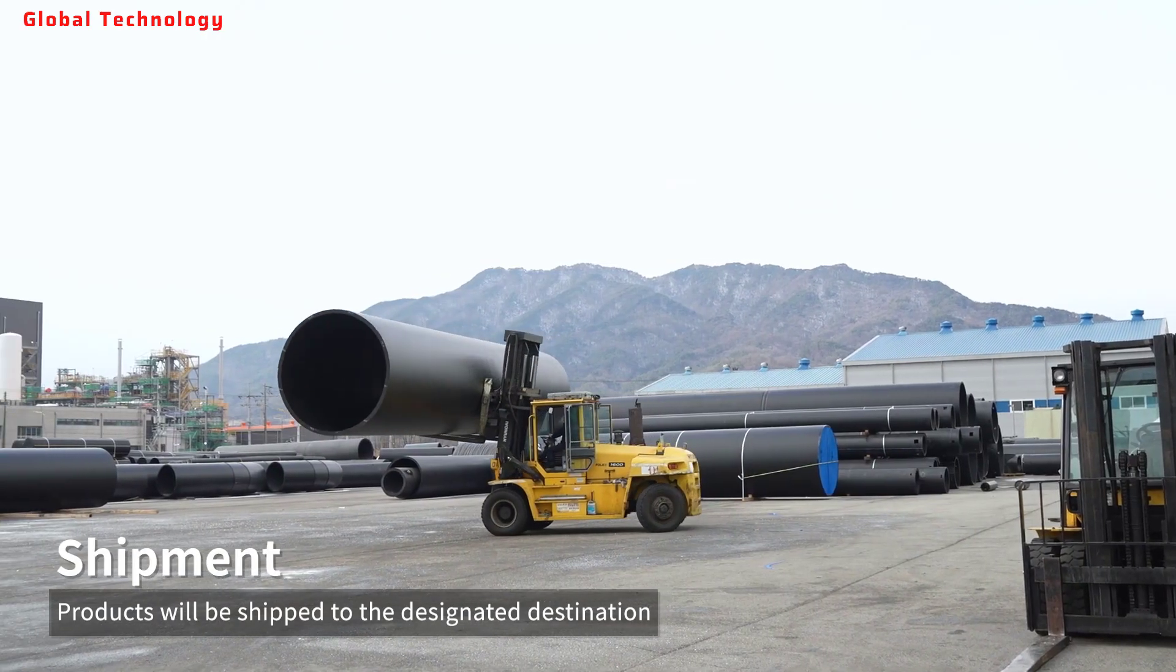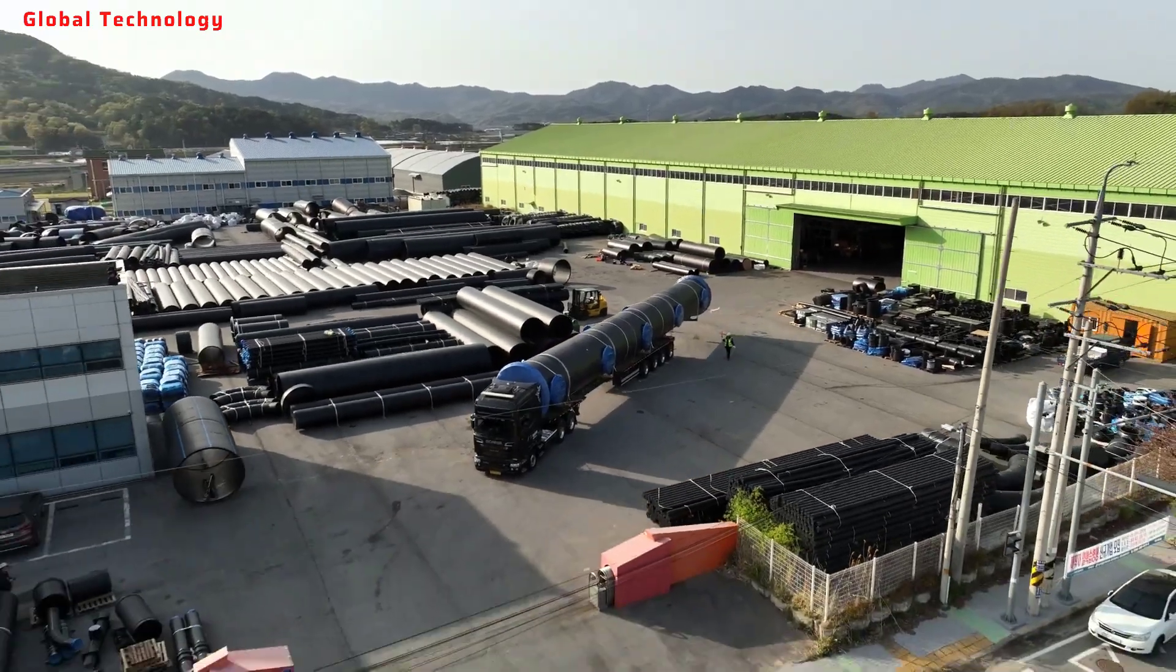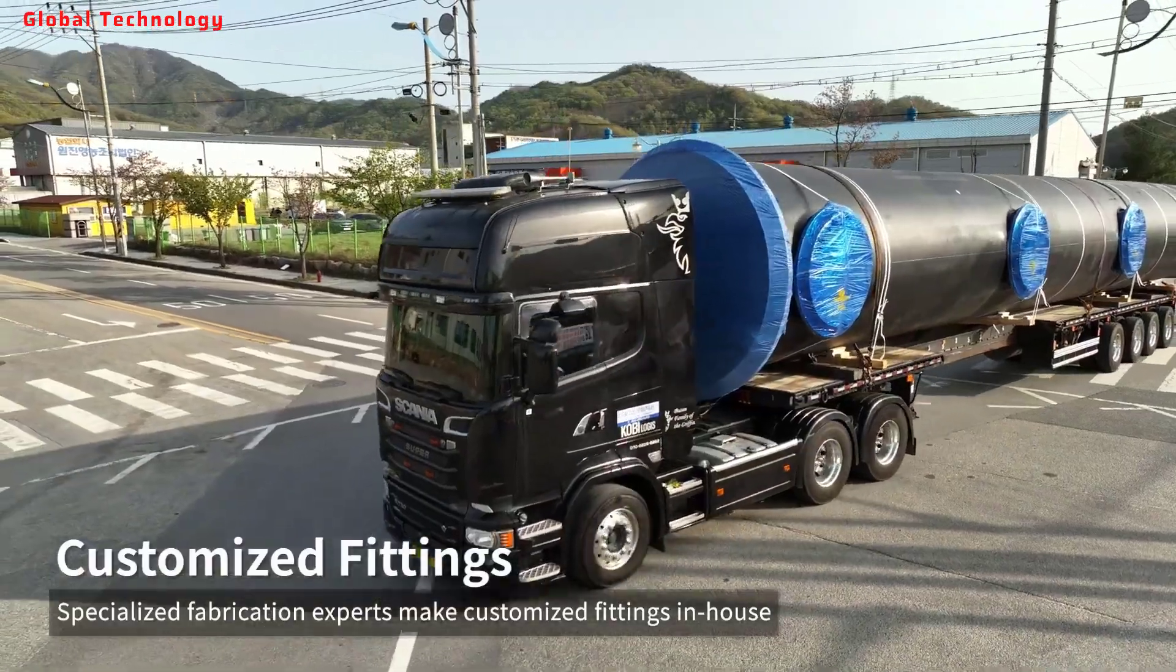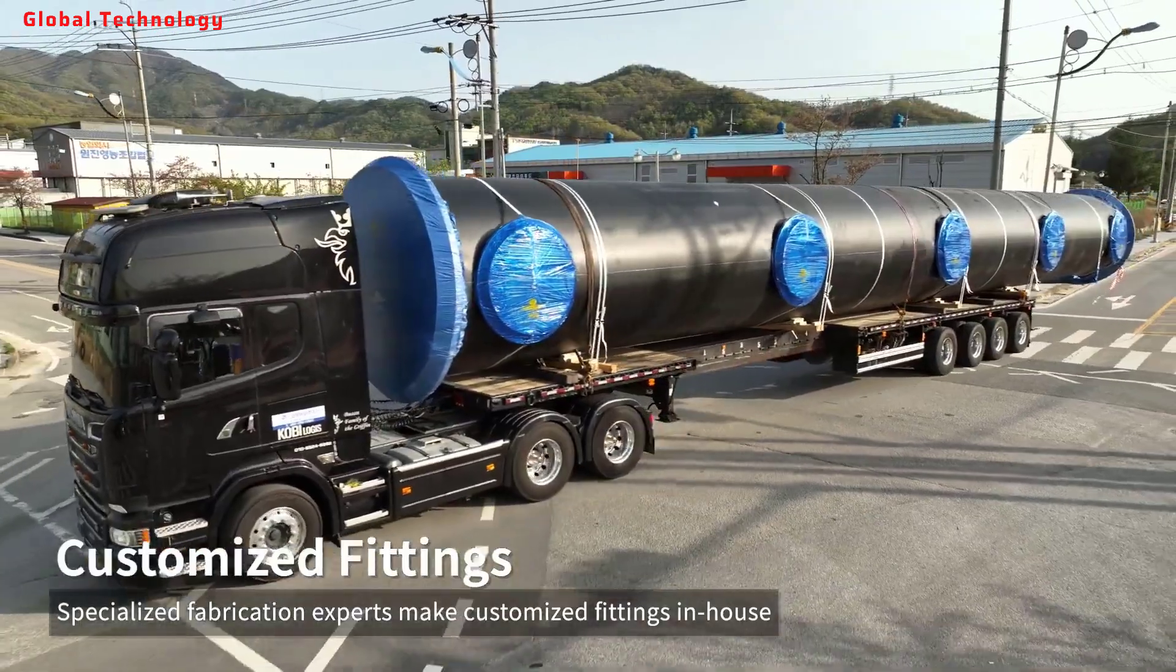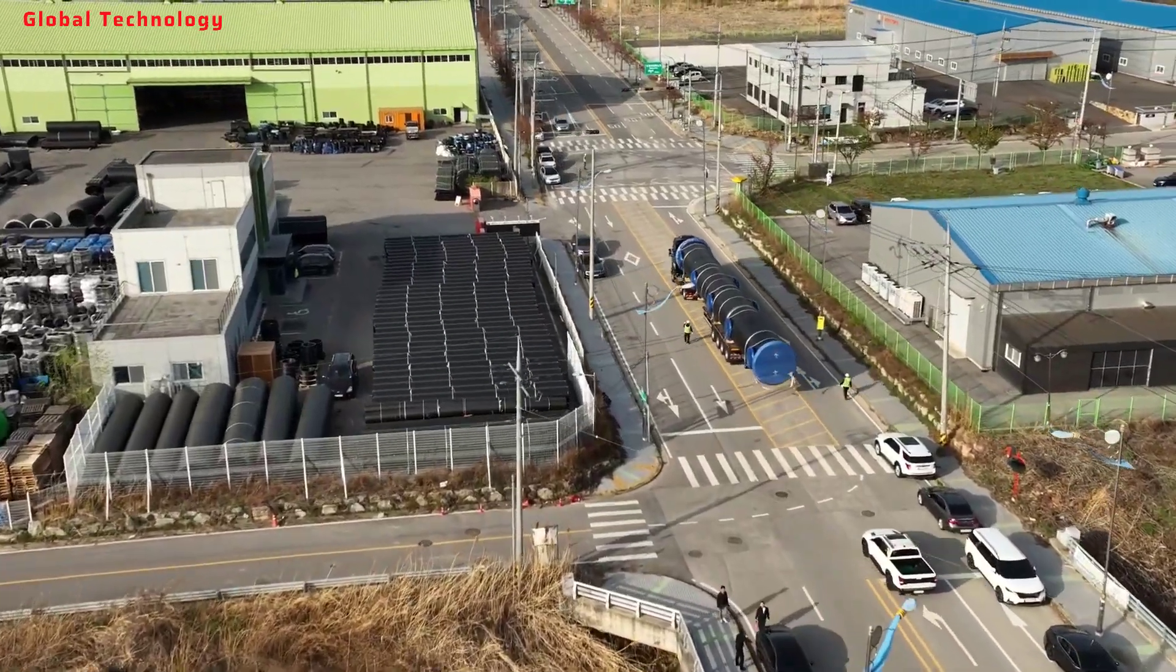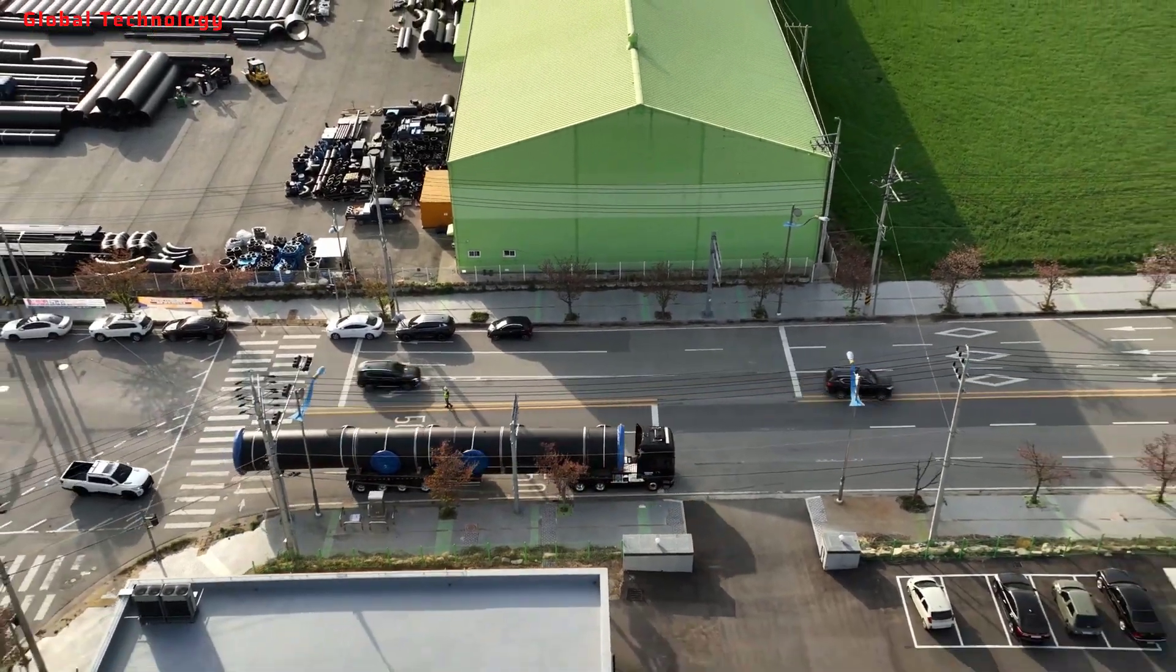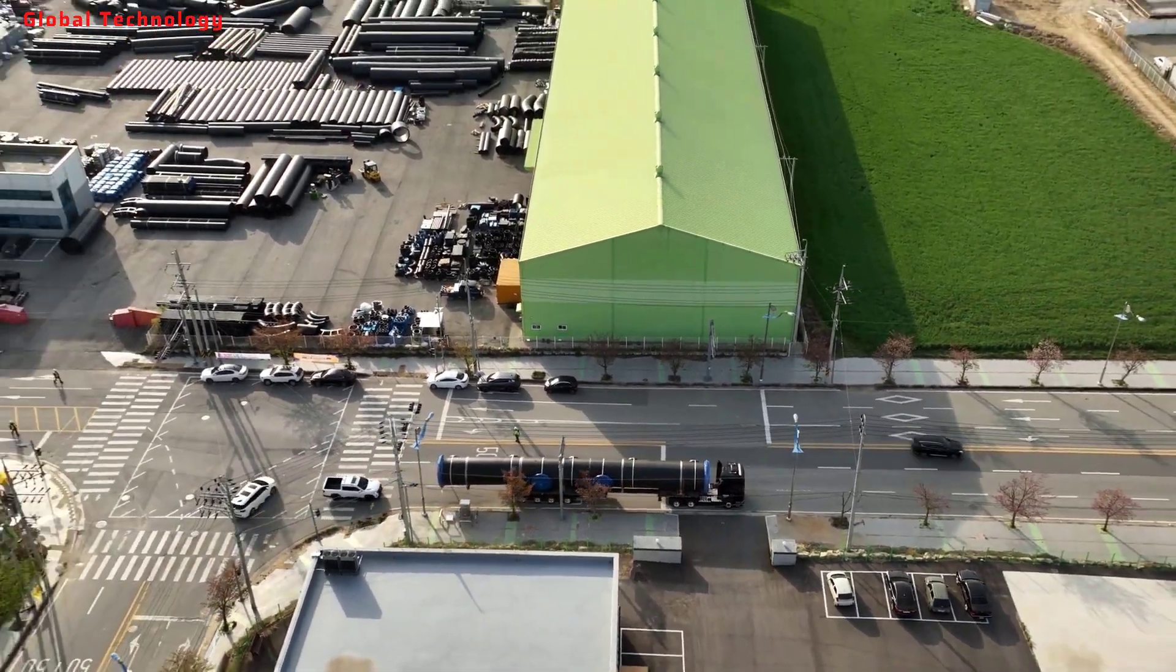HDPE pipes are ideal for transferring drinking water as they protect water quality by being corrosion-resistant and leak-free. HDPE pipe manufacturers use pressure-rated polyethylene material to make superior products.